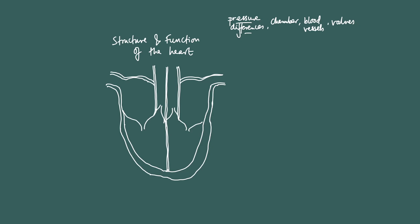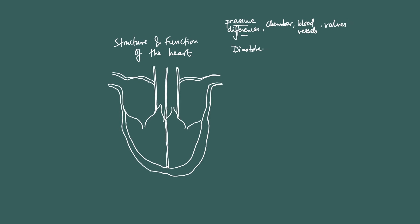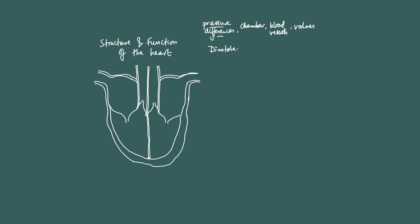Let's talk about diastole. In diastole, all compartments of the heart are relaxed. And because of that — remember the word 'because', we are explaining — the heart is relaxed, and so the pressure in the heart is lower than in the blood vessels. This is a key point.